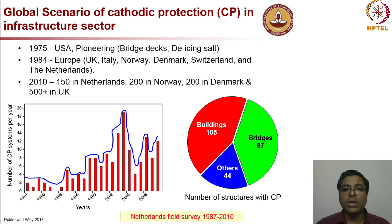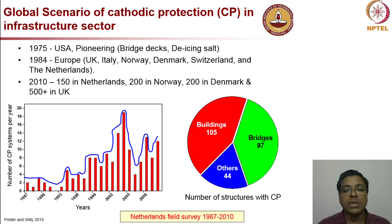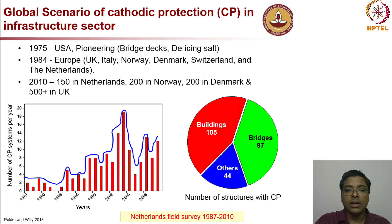The pie chart on the right shows the distribution among different structure types with cathodic protection systems. Buildings and bridges are almost similar in share, but bridges have much more impact from CP in terms of long life and effect on the economy. Both the bar chart and pie chart show data from a field survey conducted in Netherlands.